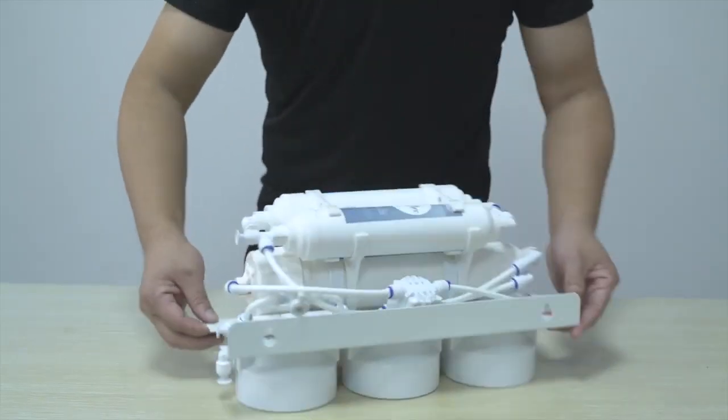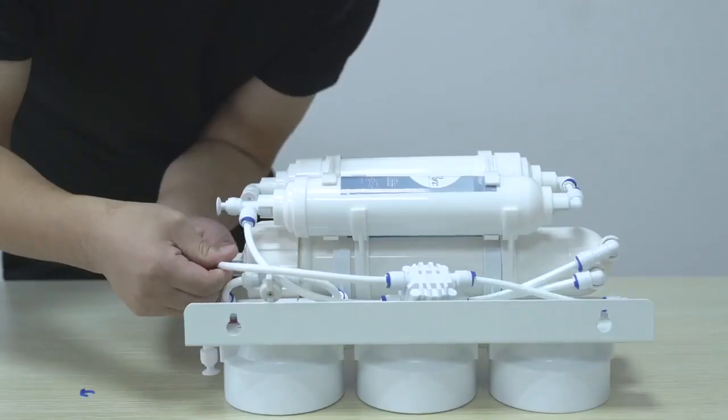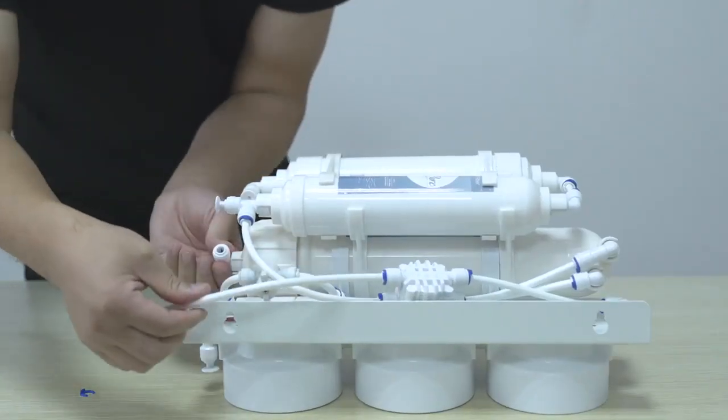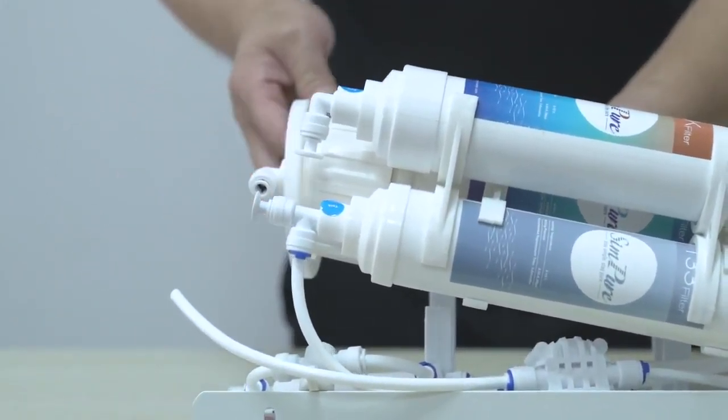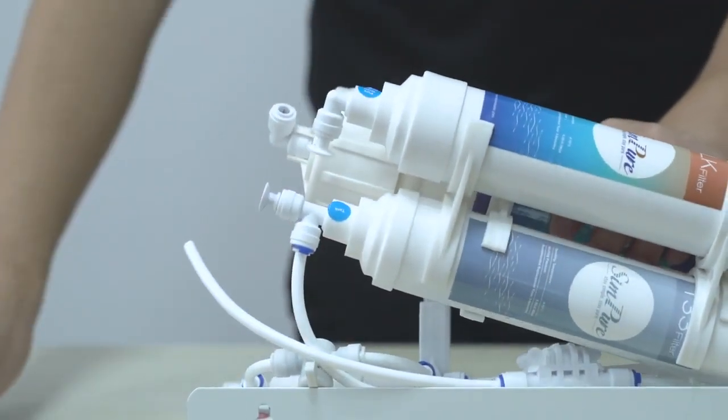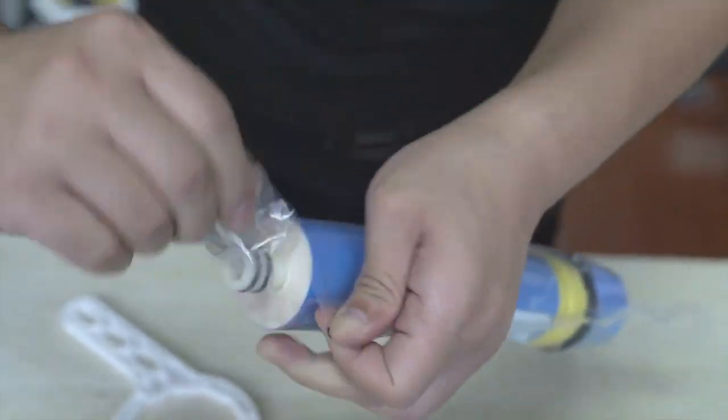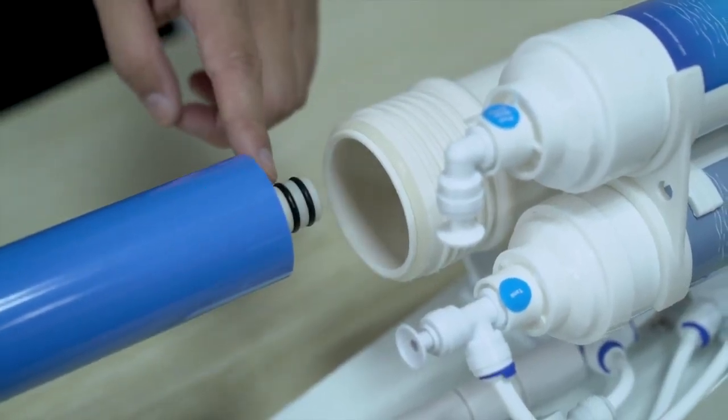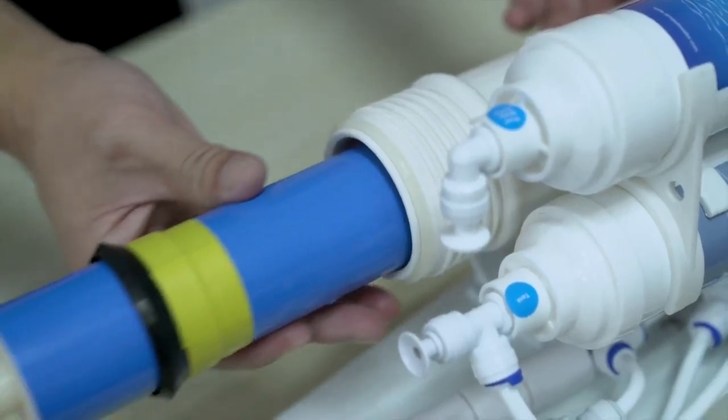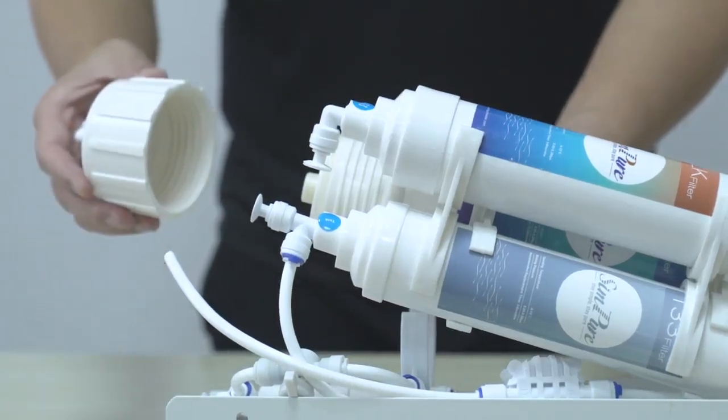RO Membrane: Remove the blue locking tube clip from the RO housing end cap and disconnect the PE tube. Unscrew the housing cap using the RO housing wrench. Reconnect the PE tube into the housing and check the O-ring inside the housing cap.